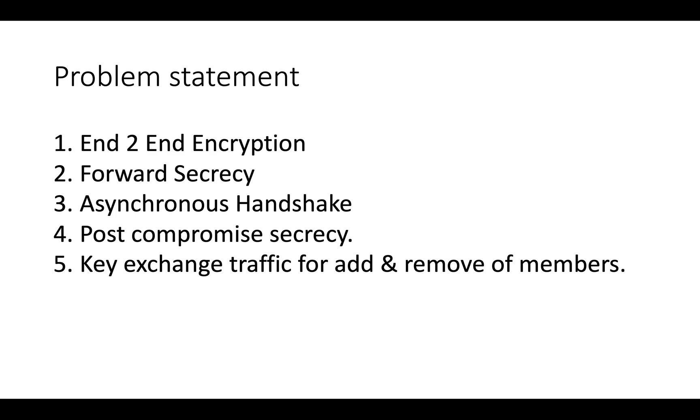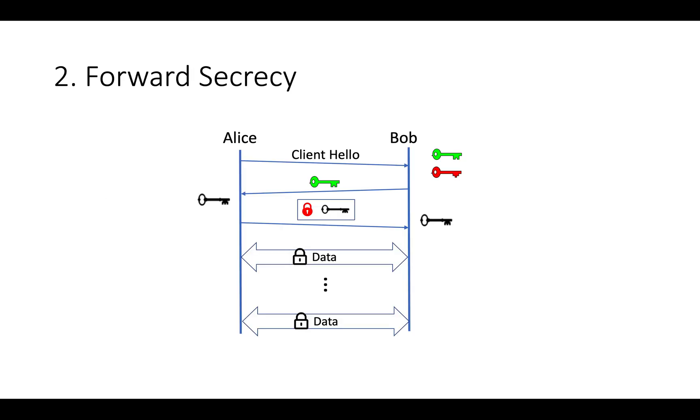Let's solve them one by one. We have seen that by taking server as a relay we can achieve end-to-end encryption, so let's take forward secrecy. Here we are using RSA algorithm to do key exchange. We have already seen this method in TLS basics and fundamentals. Here if by any chance private key gets leaked and hacker has captured all packets from beginning, then entire conversations will get exposed. Do we have any other method to do key exchange? Let's find.